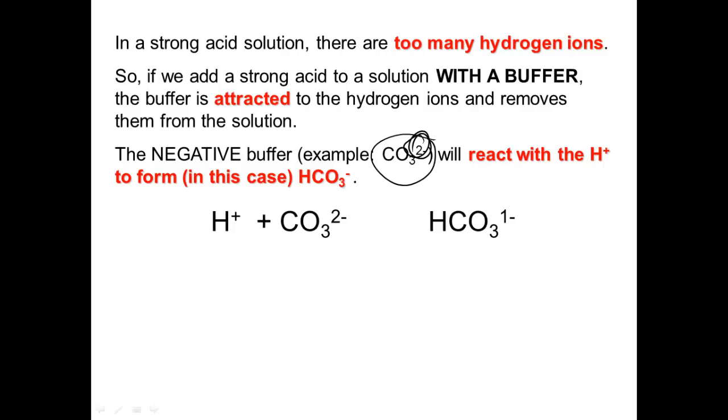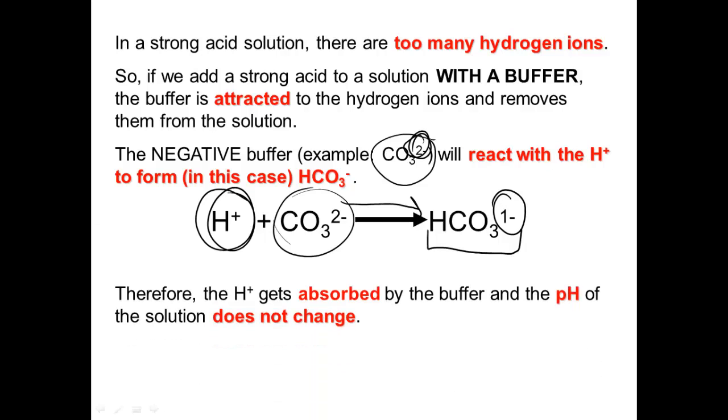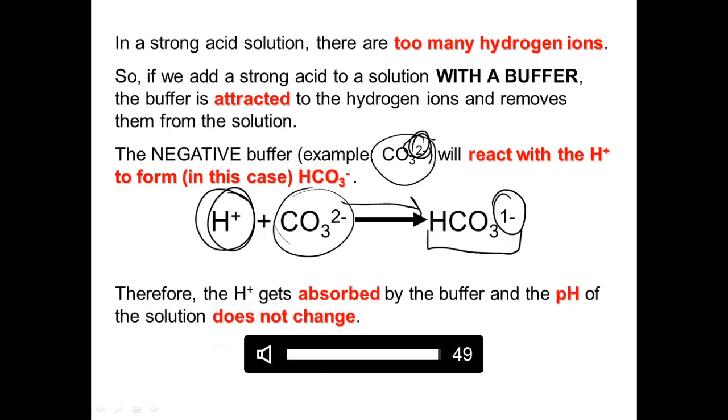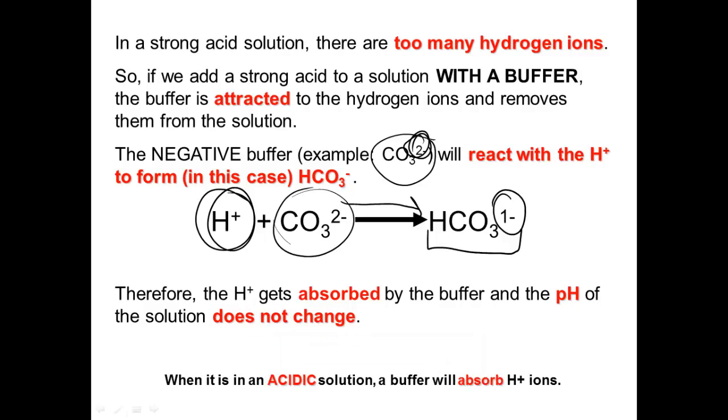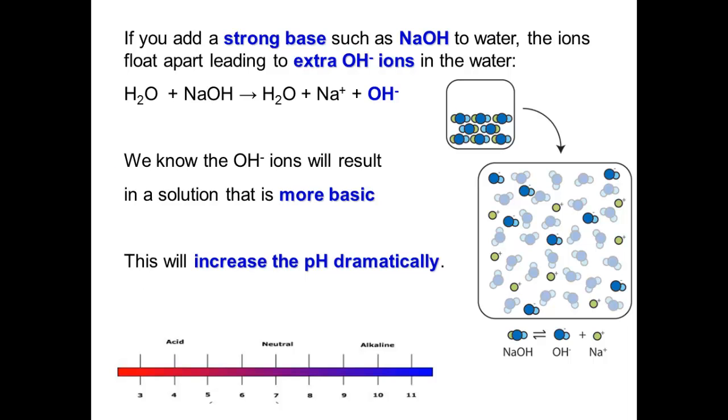So if you have a negative buffer, an example of that is CO3²⁻, it has a negative charge. And that negative charge will be attracted to the positive charge of the hydrogen. And in that way, because opposites attract, the negative CO3 carbonate will be attracted to the hydrogen ion and will stick it onto itself to become HCO3⁻, hydrogen carbonate, and it will remove that hydrogen ion from the solution. Please notice that the charge of the carbonate, two negative, becomes a charge of negative one because that positive hydrogen has been attached to it. So when hydrogen ions are absorbed by a buffer, the pH of the solution won't change even if you add an acid.